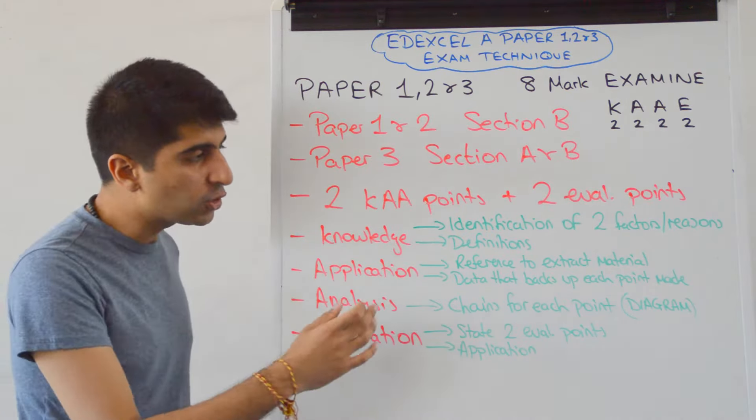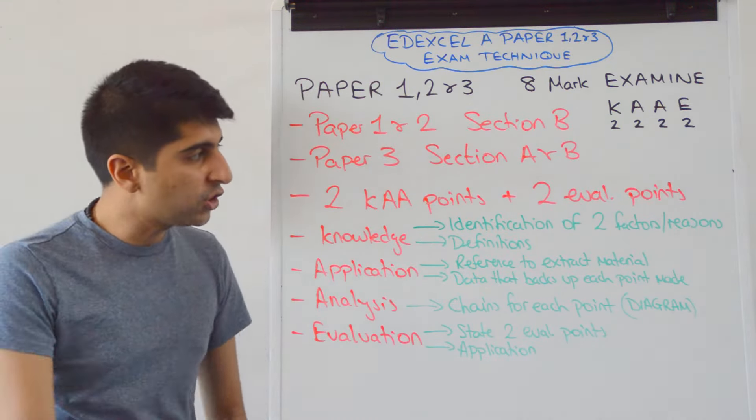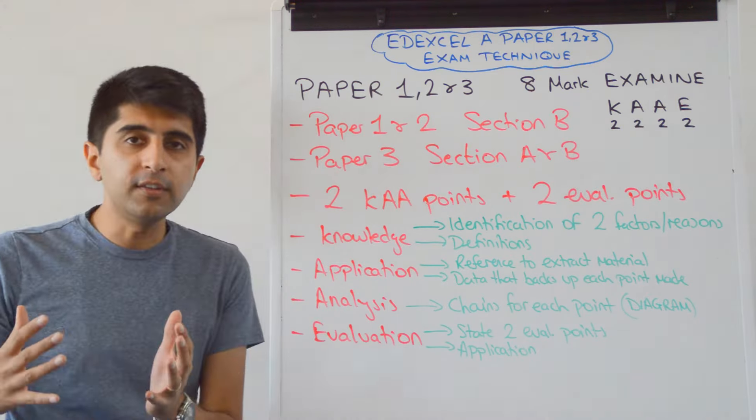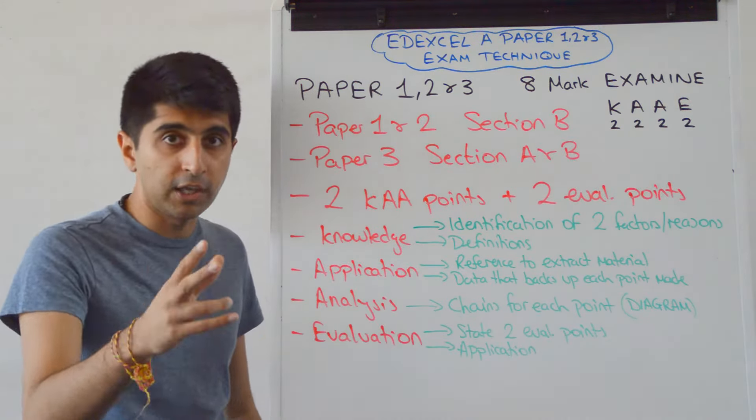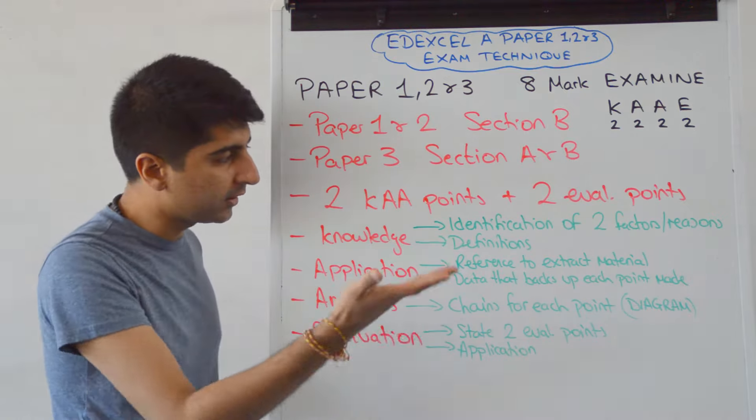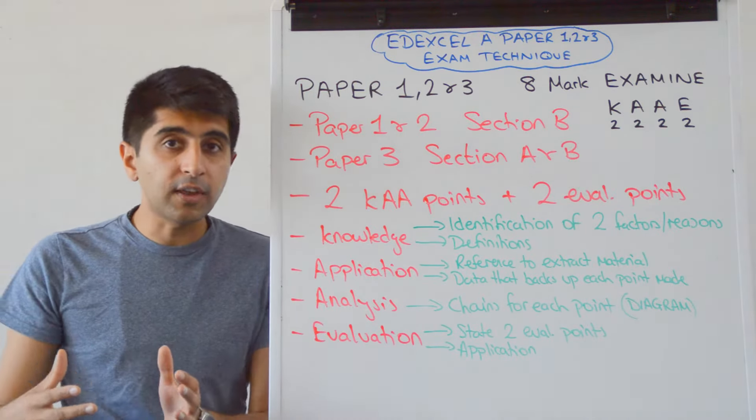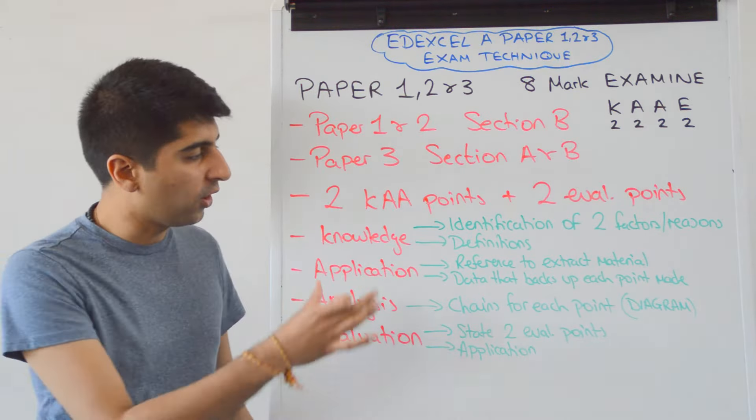How do you make sure you get it? For knowledge, what are you looking out for? Identification of two factors or two reasons—see what the question says. Identification of two factors will get you two marks for knowledge to start each paragraph. Maybe definitions as well; it's always an option for knowledge marks.